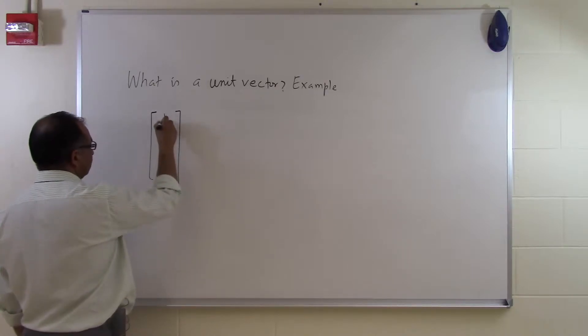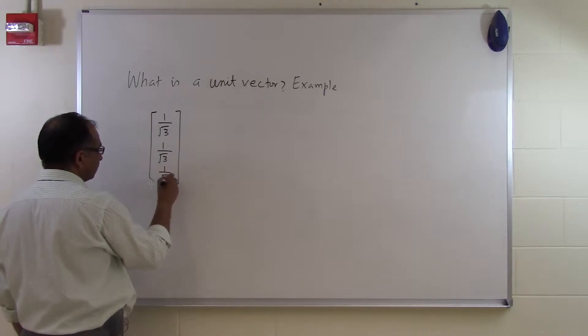So all I have to do is I can say this one is a unit vector: 1 divided by square root of 3, 1 divided by square root of 3, 1 divided by square root of 3.